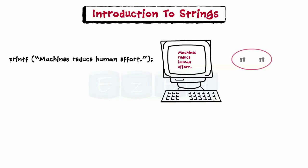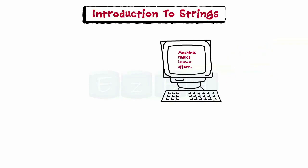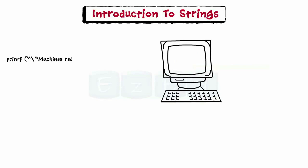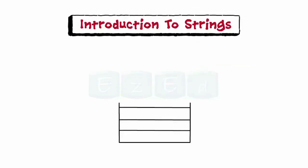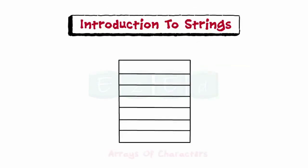As we can see, the double quotation marks are not there in the output. We can include the double quotation marks in the output by adding a backslash character. In the program, it is written in this way, which produces the corresponding output. Strings in C are represented by arrays of characters.